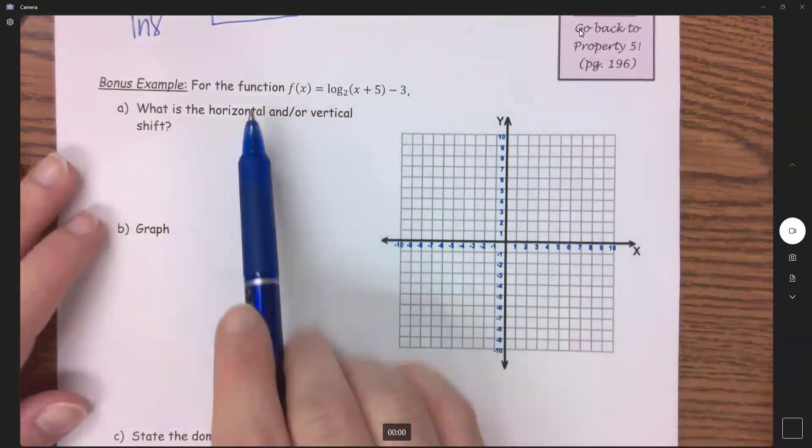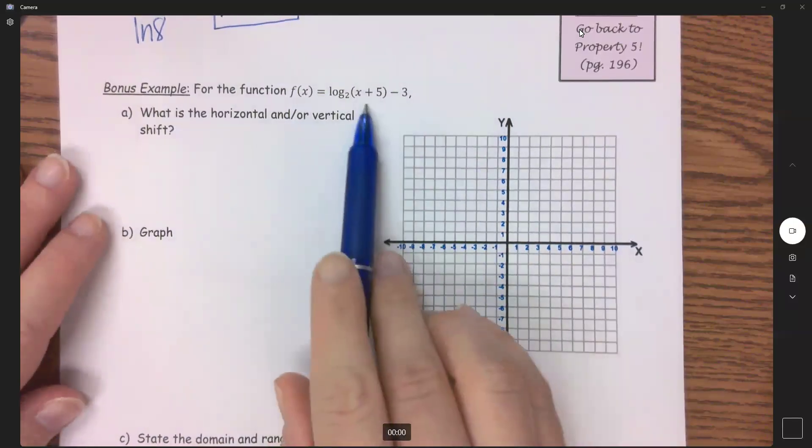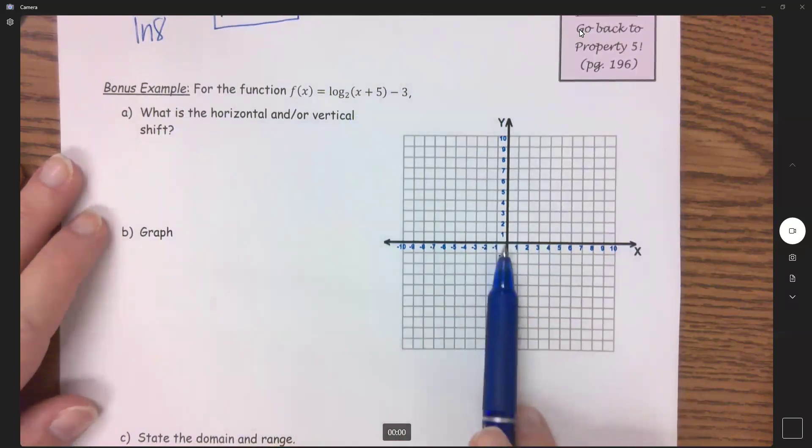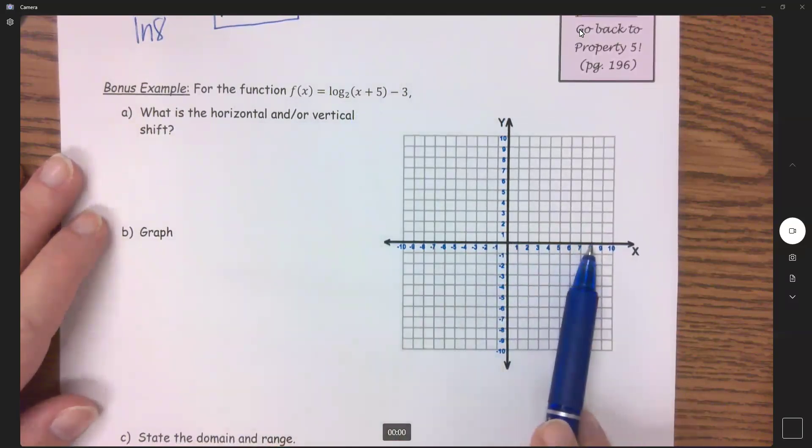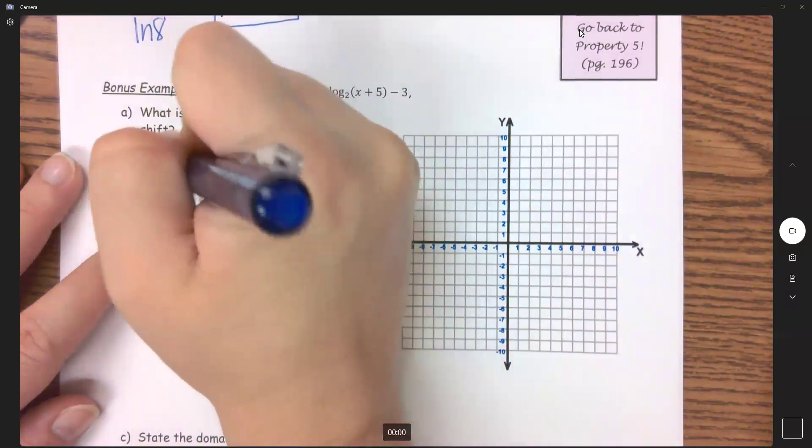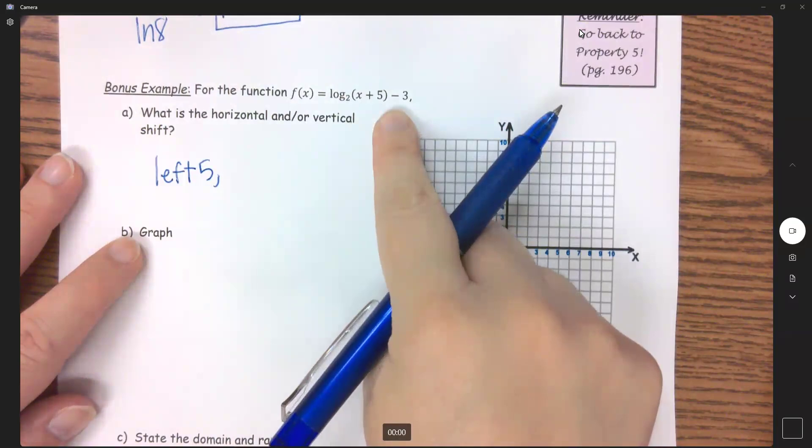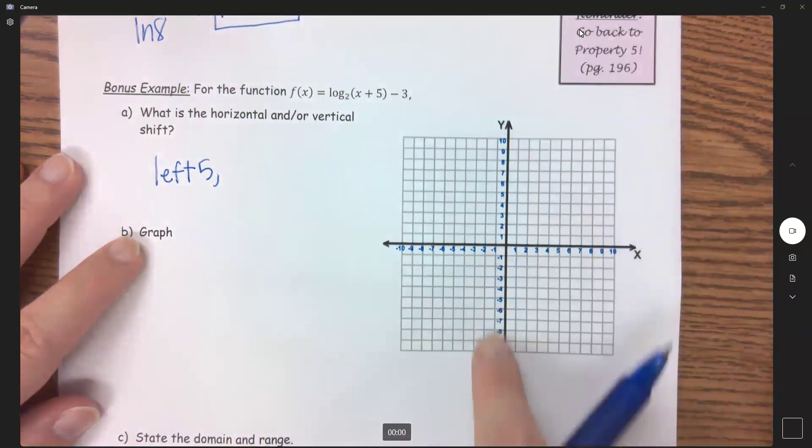So my bonus example says for the function f(x), what is the horizontal and or vertical shift? So inside opposite, that plus, you want to think it goes to the right, but it's going to go the opposite. That's going to go left five. And then minus three, outside same, going to go down three.